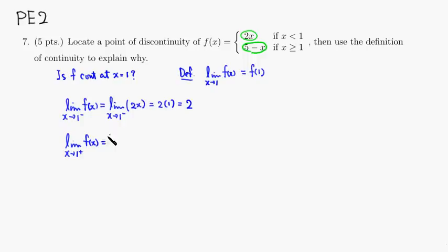How about this one? So this is going to be the limit as x approaches 1 from the right. But since x is slightly bigger than 1, we need to use the bottom formula, which is 5 minus x. So as x approaches 1, you get 5 minus 1, which gives you 4.